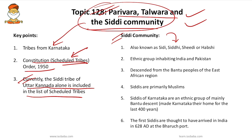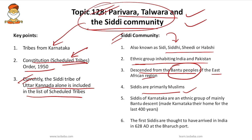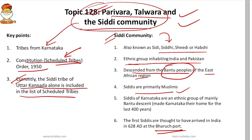The Siddhi community, also known as Siddhi, Sheedi, or Habshi, is an ethnic group inhabiting both India and Pakistan. They descended from the Bantu peoples of the East African region; some were merchants, sailors, servants, or slaves. They primarily live in Karnataka, Gujarat, and Hyderabad. The Siddhis are primarily Muslims, though some are Hindus and some belong to the Catholic Church. The Siddhis of Karnataka have made it their home for the past 400 years, with the first Siddhis believed to have arrived in India in 628 AD at Bharuch Port.